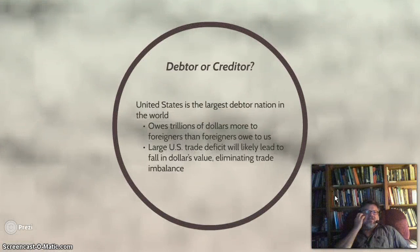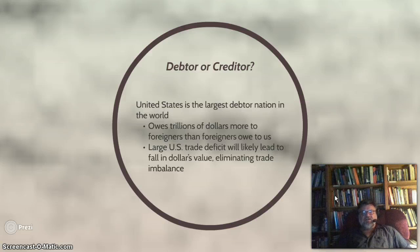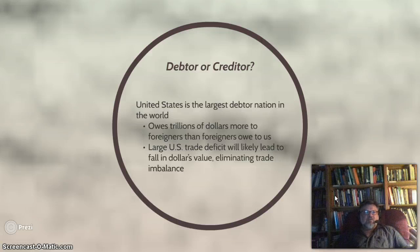The United States is the largest debtor nation in the world — we owe trillions of dollars more to foreign countries than they owe to us, and a lot of our foreign debt goes to China. The large U.S. trade deficit will likely continue to lead to a fall in the dollar's value. A fall in the dollar's value makes it possible for us to export more, because people can buy U.S. products more cheaply when the dollar is cheap, and that helps balance the trade imbalance.